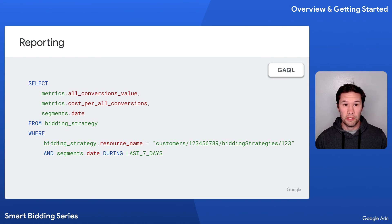Here's an example of a query that will show you the daily value of all conversions and the daily cost of ad interactions over the past seven days.